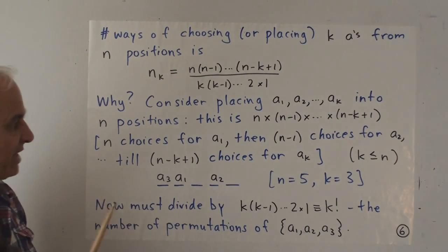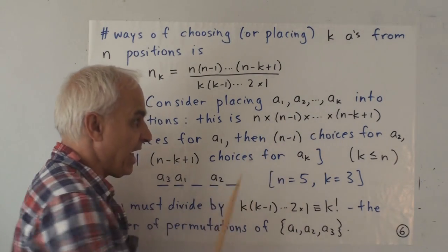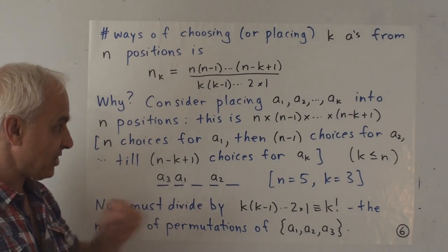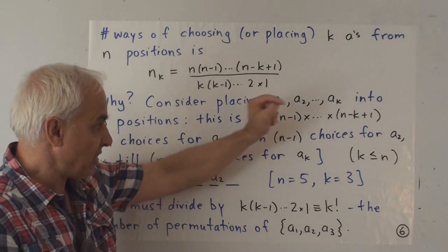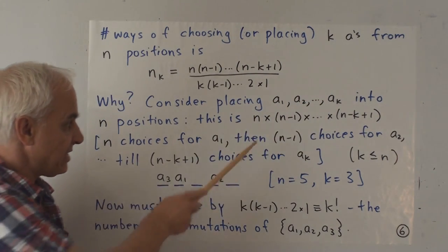down to n minus k plus 1 places left at that last choice when we're putting in a sub k. So the number of ways of placing these k objects into the n places where we insist on putting a1 first, and then a2, and then all the way up to ak, is this number here.